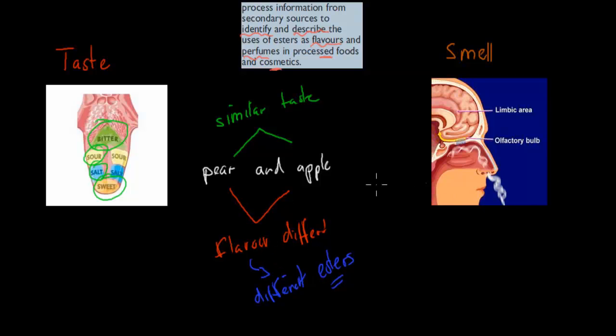And the same when it comes to perfume. The reason why we can smell perfume is because of esters. So you can see this is our nose, and how smell works is we've got our particles coming in, they will hit the olfactory bulb, and from there the signal gets sent to the brain, and we get our smell being interpreted.